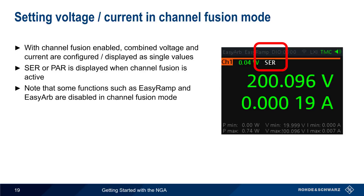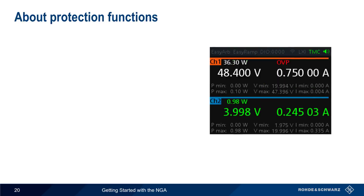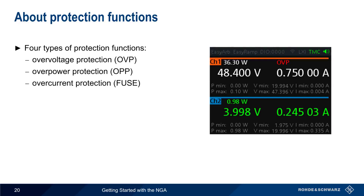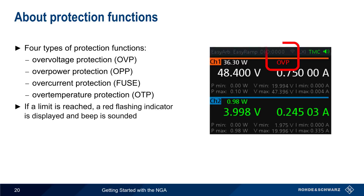One thing to note is that some NGA functions, such as EZRAMP and EZARB, are disabled when operating in channel fusion mode. When operating either as individual channels or as combined channels, the NGA provides four different types of protection functions. The first three — over voltage protection, over power protection, and over current protection — are user configurable and will be described on the next slides. There's also an over temperature protection function that protects the supply from excessive heat. If any of these protection limits is reached, a red indicator flashes on the NGA display and a beep is sounded.